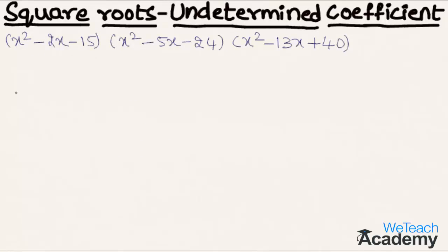The first example is the product of three expressions: (x² - 2x - 15)(x² - 5x - 24)(x² - 13x + 40). Let us solve this expression under the method of undetermined coefficients.